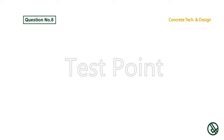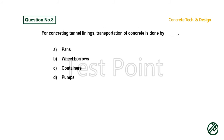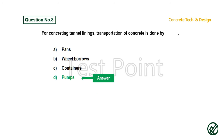Question number 8: For concreting tunnel linings, transportation of concrete is done by — Option A: Pans. Option B: Wheelbarrows. Option C: Containers. Option D: Pumps. Answer is Option D: Pumps.